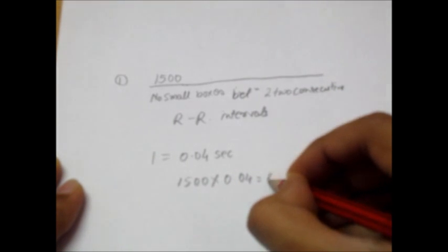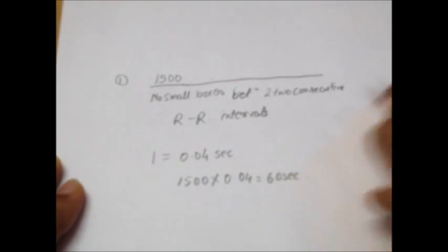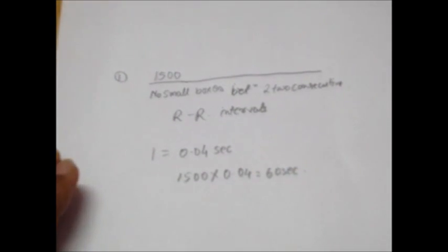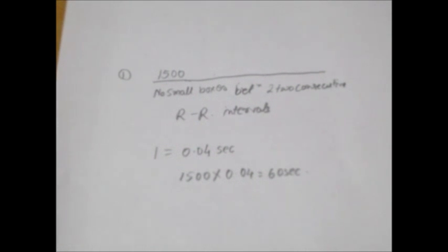So this is the first method to calculate heart rate: that is 1500 divided by number of small boxes between two consecutive RR intervals.